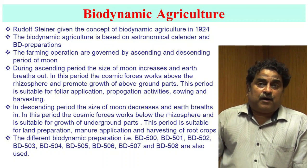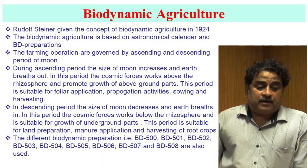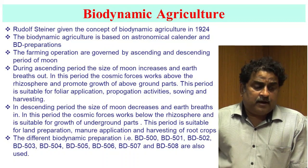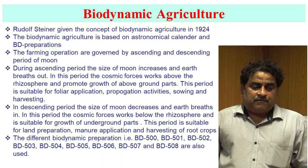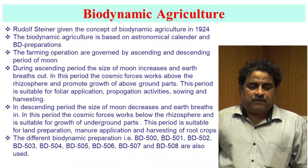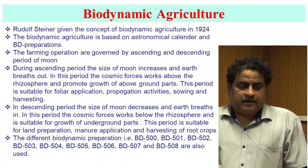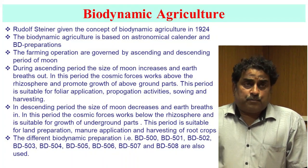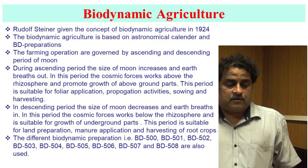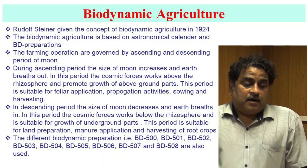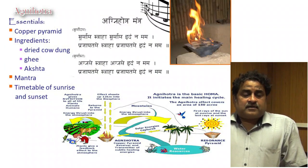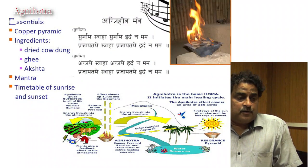Different biodynamic preparations like BD 500, BD 501, BD 502, BD 503, BD 504, BD 505, BD 506, BD 507, and BD 508 are also used. The cow pit path is another thing utilized in biodynamic agriculture.